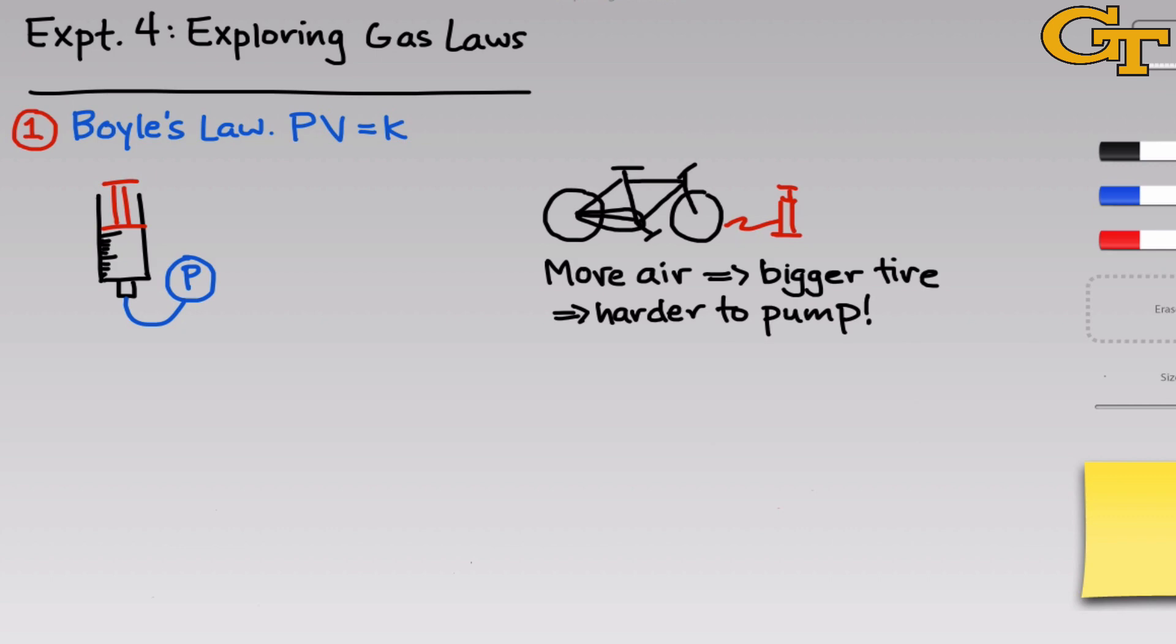So in the first part of this experiment, we'll systematically vary the plunger position, measure the volume using the markings on the side of the syringe, and record the pressure that's measured by a LabQuest pressure gauge. In that way, we can generate a graph of volume on the x-axis and pressure on the y-axis.